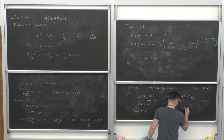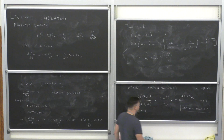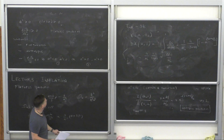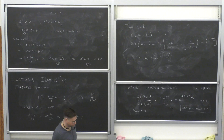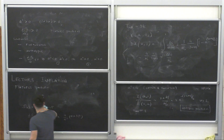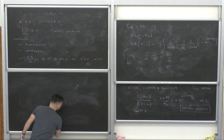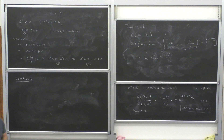That's problem number two. The possible solution is a phase of accelerated expansion: A″ > 0, which means w < −1/3.